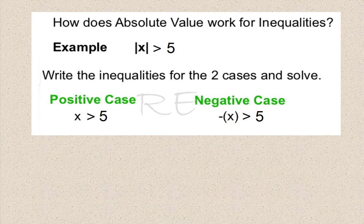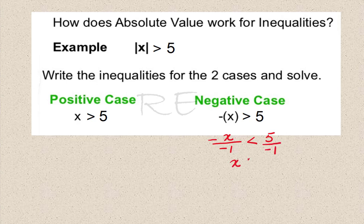If the absolute value of x is greater than 5, we have a positive case in which x is strictly greater than 5. Then we have a negative case in which negative x is greater than 5. We divide both sides by negative 1 and reverse the inequality symbol, giving x less than negative 5.